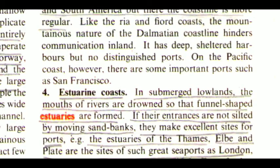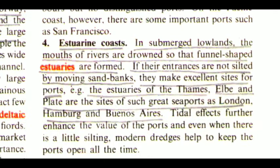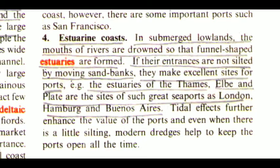On the Pacific coast, however, there are some important ports such as San Francisco. The fourth one is Estuarine Coast. In submerged lowlands, the mouths of rivers are drowned so that funnel-shaped estuaries are formed. If their entrances are not silted by moving sandbanks, they make excellent sites for ports — e.g. the estuaries of the Thames, Elbe and Plate are the sites of such great seaports as London, Hamburg and Buenos Aires. Tidal effects further enhance the value of the ports and even when there is a little silting, modern dredges help to keep the ports open all the time.